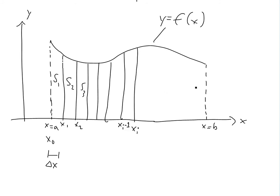If you keep doing this all the way up to here, you're going to have n number of regions. So this one's going to be n. And then this last region here is going to be xn minus 1 — it's always going to be this same general pattern. And this region here is going to be si, and this one is going to be sn.